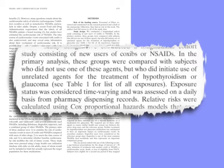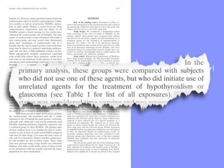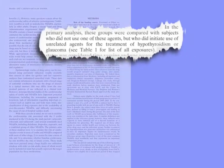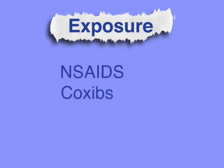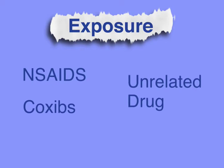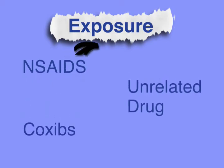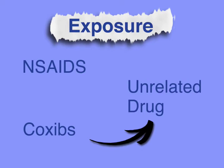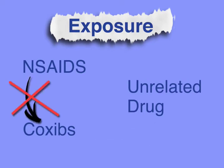In the very next sentence of this paper, the authors say: 'In the primary analysis, these groups — those who used either NSAIDs or COXIBs — were compared with subjects who did not use one of these agents, but who did initiate use of unrelated agents for the treatment of hypothyroidism or glaucoma.' This sentence makes it clear that they are identifying their sample group by exposure: participants either used NSAIDs or COXIBs (the exposed groups) or used some other unrelated drug (the unexposed group). By looking a little deeper, we also realize that there are, in a sense, two parallel studies: one in which the exposure is NSAID use and another in which the exposure is COXIB use, both compared to another drug. NSAIDs are not being directly compared to COXIBs.